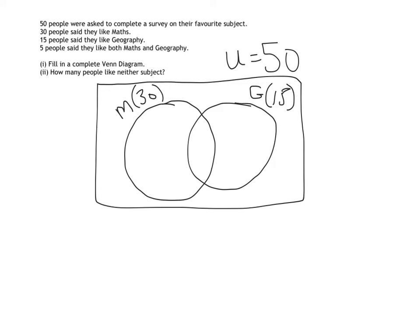The reason why I haven't filled that directly into my Venn diagram is because the number 5, which is that 5 people like maths and geography, needs to be represented first. If we think back to our definitions of what an intersection is, it's the elements that are in common between the two sets. So those 5 people are in common between the maths set and the geography set.